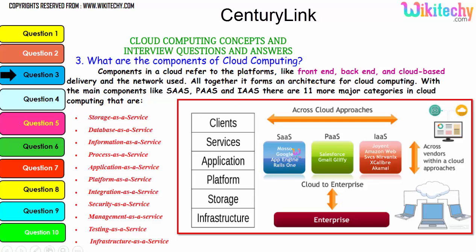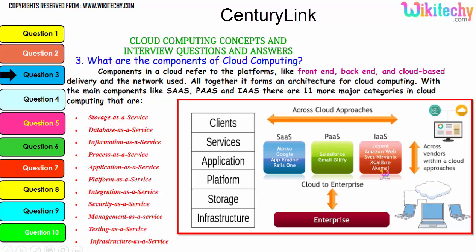For Software as a Service, examples include App Engine, Google, and Azure. For Platform as a Service, examples include Gmail, Glyphi, and Salesforce. For Infrastructure as a Service, you have companies like Amazon Web Services, Akamai, and others.